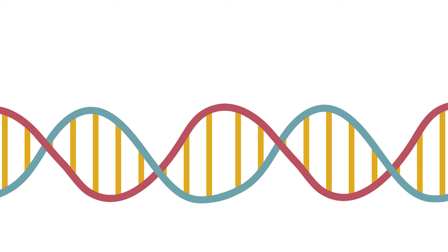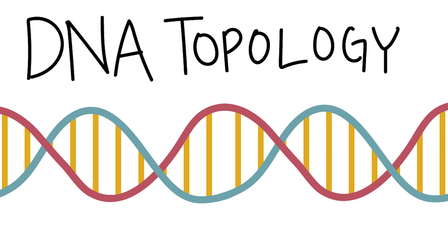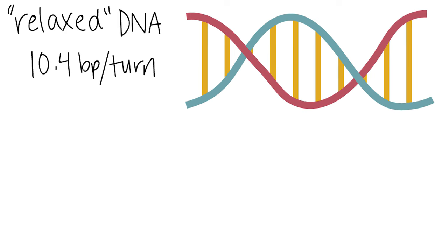This video will use a physical model of DNA to help explain the significance of DNA topology and simulate how specific enzymes modify the conformation of double-stranded DNA. The unstrained, or relaxed, DNA structure has 10.4 base pairs per turn of the helix.